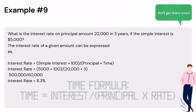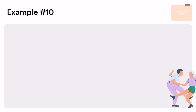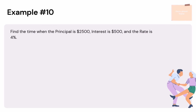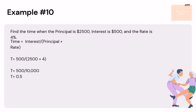Example 9: What is the interest rate on a principal amount of $20,000 in 3 years if the simple interest is $5,000? Interest rate = (SI × 100) ÷ (P × T) = (5,000 × 100) ÷ (20,000 × 3) = 500,000 ÷ 60,000 = 8.3%. Therefore, the interest rate is 8.3%. Time formula: time equals interest divided by principal times rate. Example 10: Find the time when principal is $2,500, interest is $500, and rate is 4%. T = 500 ÷ (2,500 × 4) = 500 ÷ 10,000 = 0.5 years, which is also equivalent to 6 months.